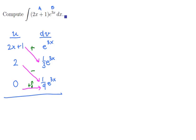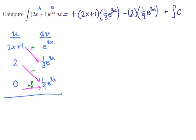And now we just read off what the table says. We're going to have positive 2x plus 1 times 1 third e to the 3x. The next row will read negative 2 times 1 ninth e to the 3x. And the last row reads plus the integral of 0 times stuff.